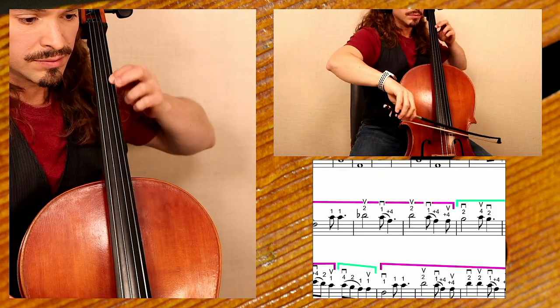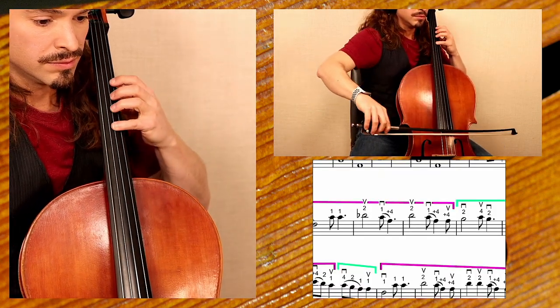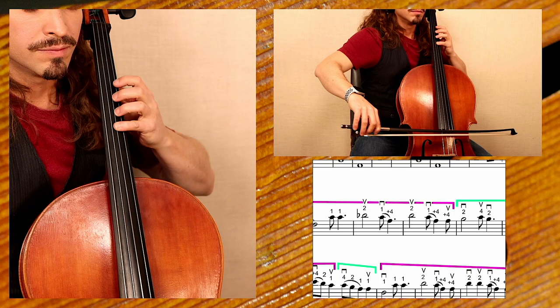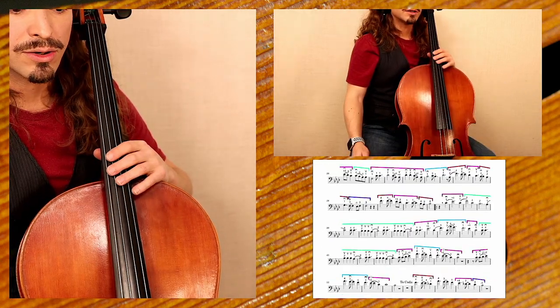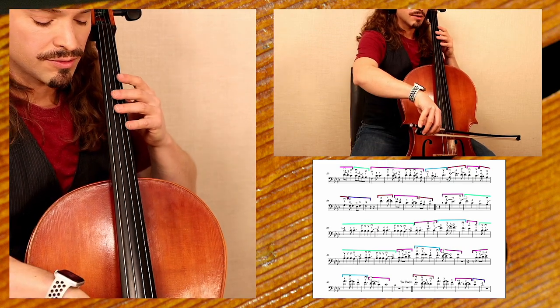This down bow motion string cross is very nice. Let's move along to the chorus, measure 32. Follow the bowings.